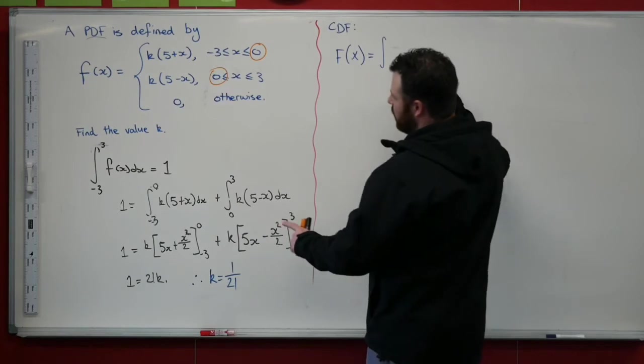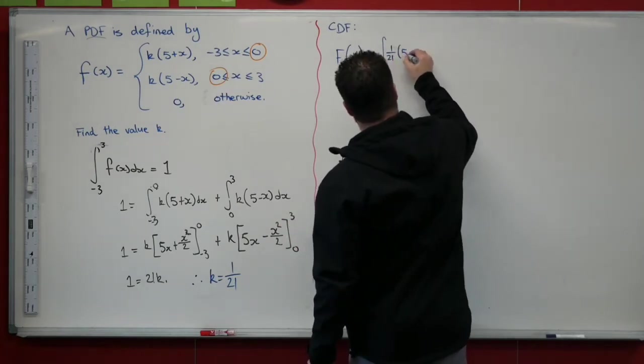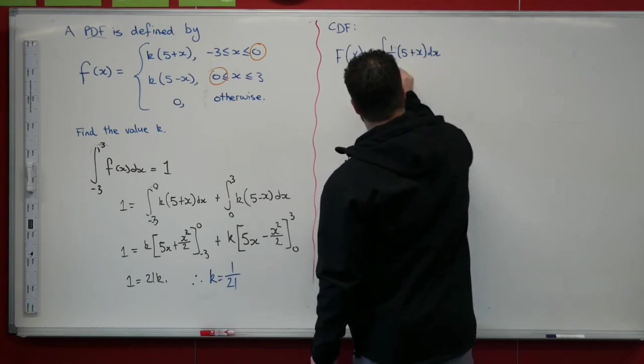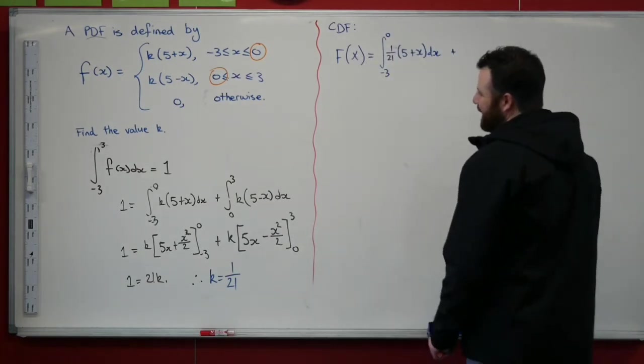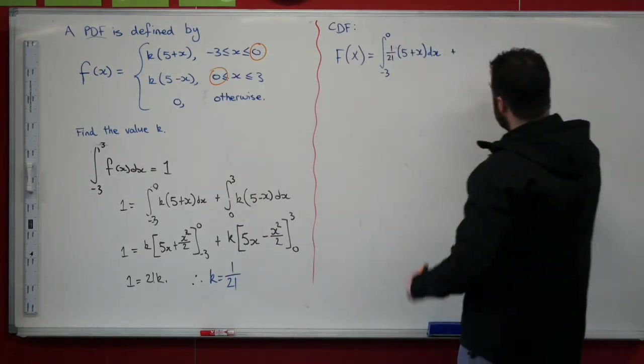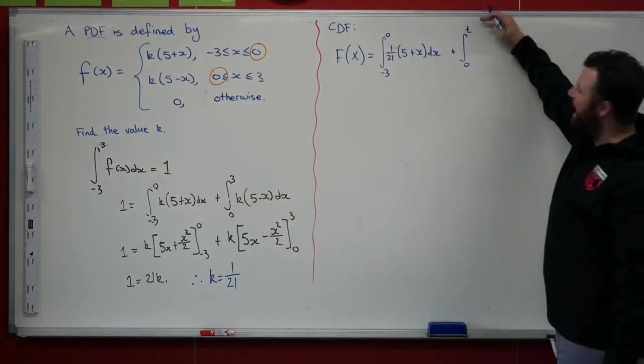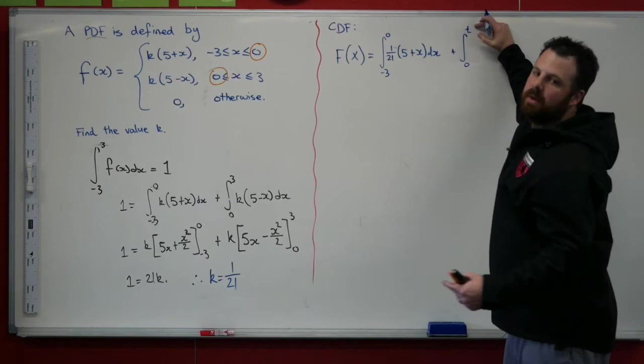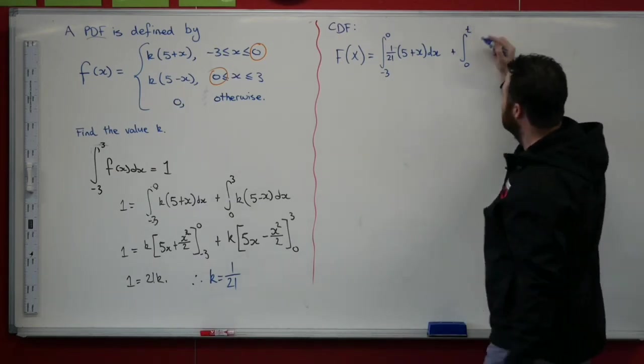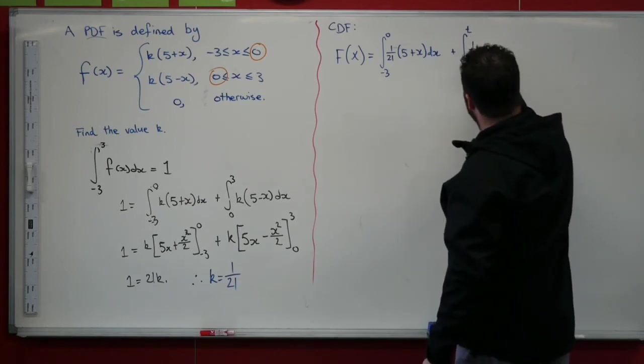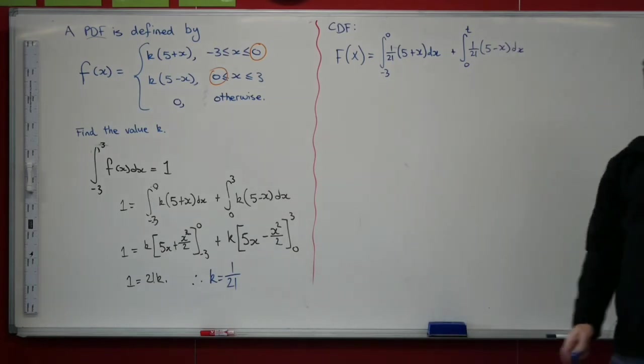So we're going to have the integral of 1/21(5 + x) with respect to x between minus 3 and 0. And what we're going to do is we're going to need to add that with the integral between 0 and t, our value t, that 1 that we want to substitute. Because remember, the CDF is a function. It's going to tell us where we're going to end up.